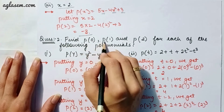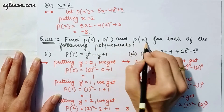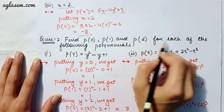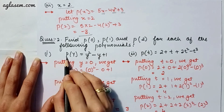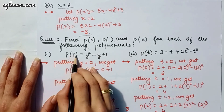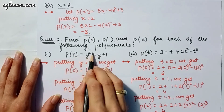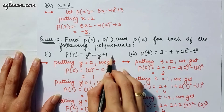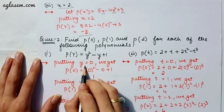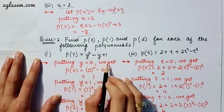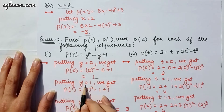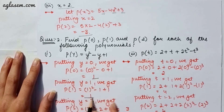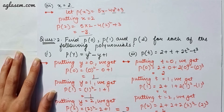Moving to our second question, which says: find p(0), p(1), and p(2) for each of the following polynomials. The first part says p(y) = y² - y + 1. Putting y = 0 we get 1, putting y = 1 we get 1, and putting y = 2 we get 3.